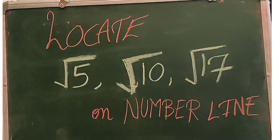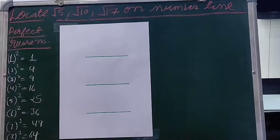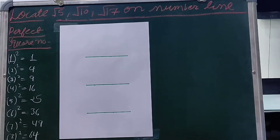Hello everyone, today I will show you how to locate root 5, root 10, and root 17 on a number line. Numbers which are nearer to the perfect square number, we can easily locate them on the number line. I will show you a simple trick for this type of number.